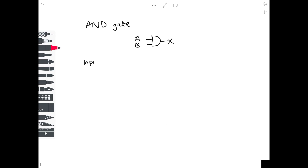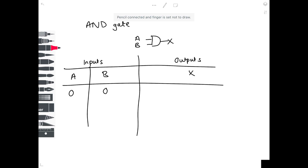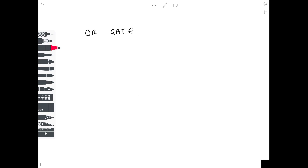Let's draw this in a truth table with both inputs and outputs. Our inputs are a and b, and our output is x. When both inputs are zero, the output is zero. When a is one and b is zero, we haven't met the AND gate criteria so the output is zero. When a is zero and b is one, similarly the output is zero. Only when both are one does the AND gate give an output of one.